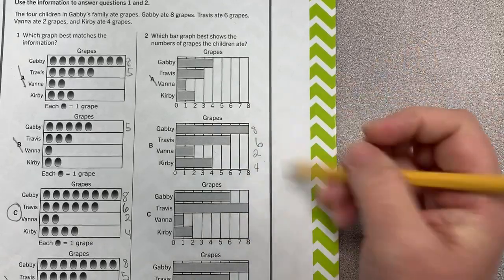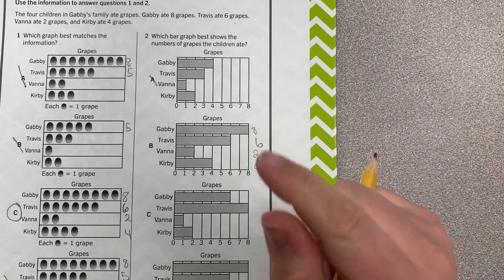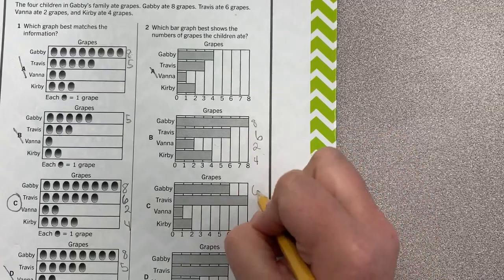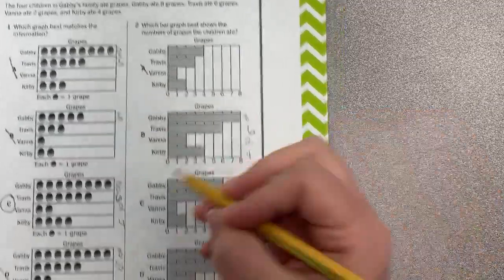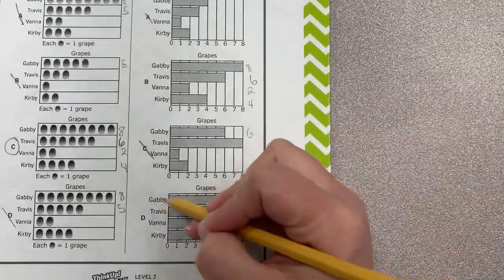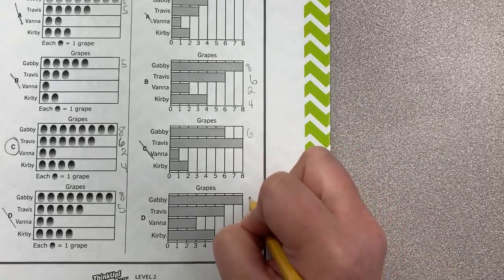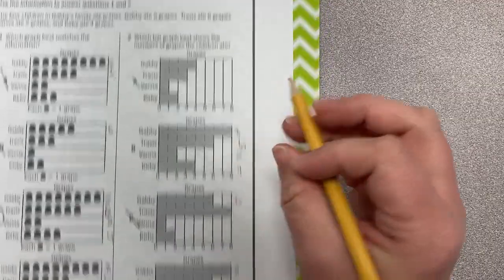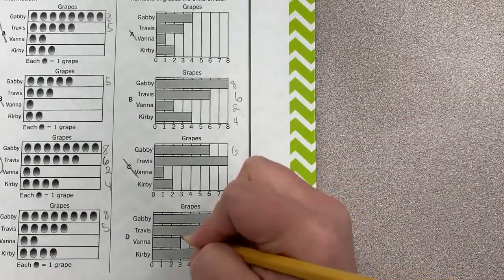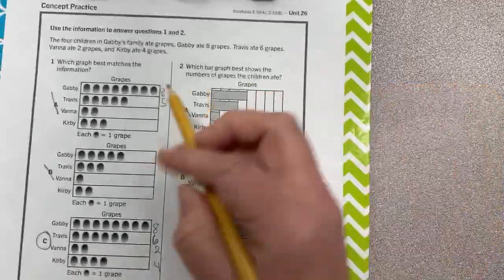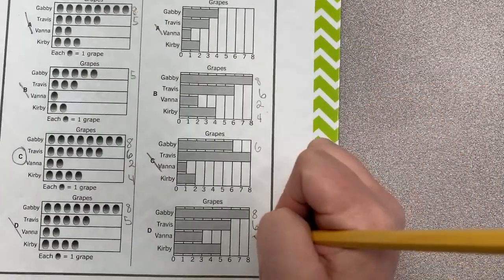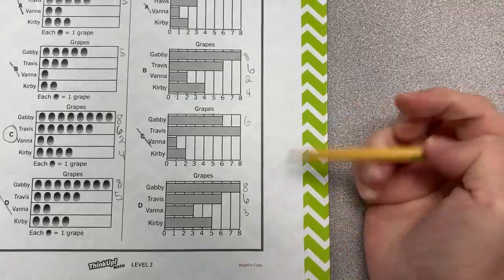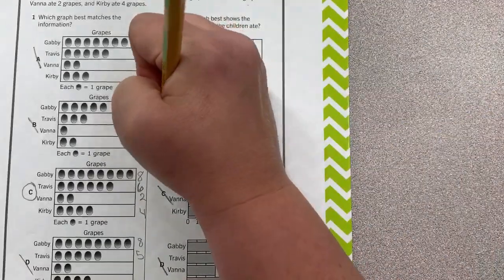But once again, let's double check the other ones just in case. Okay, Gabby, six. No, no. She needs eight. So this is wrong. Okay, Gabby, eight. Gabby, eight, eight. Travis, six. Yep. Okay. Vanna, three. No, she ate four. No, she ate two. Sorry, she ate two. Either way, it is incorrect. So nope, not D. So we have B.